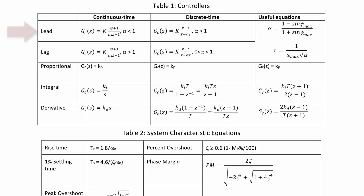A lag controller in continuous time is k times tau s plus 1 over alpha tau s plus 1 where alpha is greater than 1. And in discrete time it is k times z minus tau over z minus alpha tau where alpha is between 0 and 1.